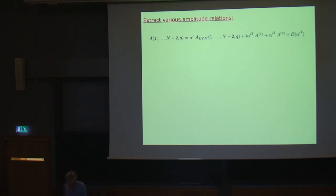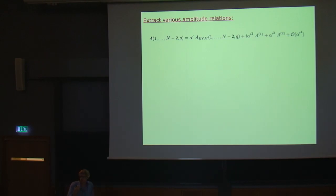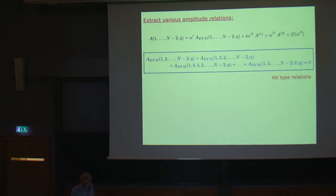What can we learn for field theory? We can extract various amplitude relations, just as was the case for pure open string monodromy relations, from which one obtained the Kleiss-Kuijf and BCJ relations. Now let's see what we get from these mixed relations. This mixed amplitude, because of dimensionality, has its lowest piece starting with α′, simply because the kinematical S_ij in front carries a factor of α′. The next term is complex, and then there is a real term. Inserting into the monodromy relations, the lowest order relation we get is simply a KK-type relation for Einstein-Yang-Mills amplitudes.